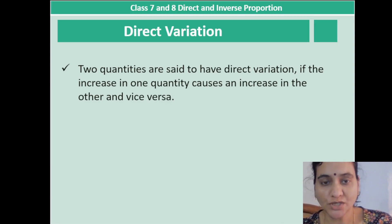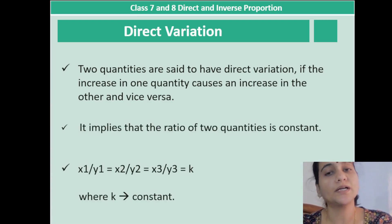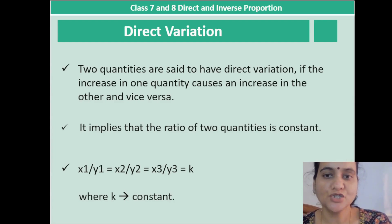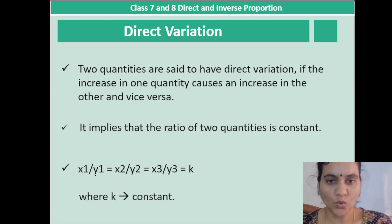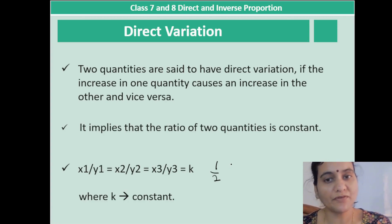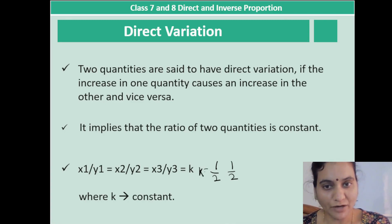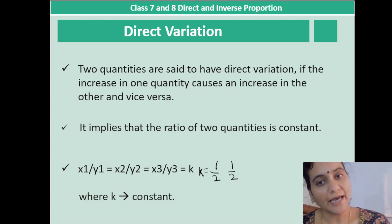Two quantities are said to have direct variation if an increase in one quantity causes an increase in the other, and vice versa. This implies that the ratio of the two quantities is constant — that constant is called k. Direct variation means the ratio of two quantities is constant and an increase in one leads to an equal proportional increase in the other.